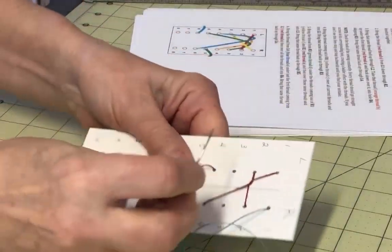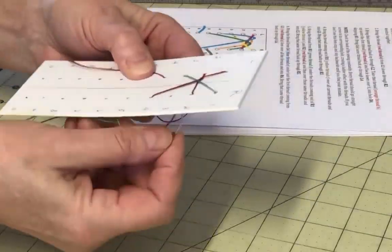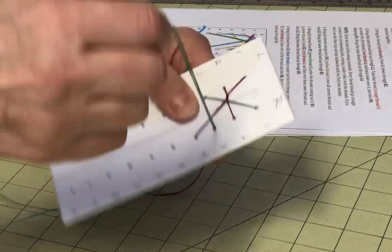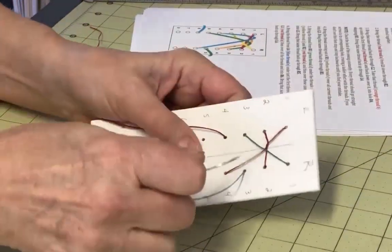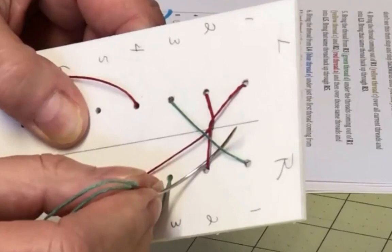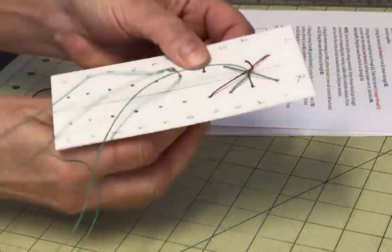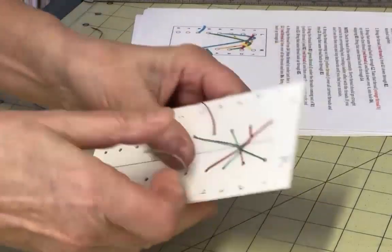Now move to the thread coming out of R1, the green thread in this video, and take it over the other threads and down through L3, and then back up through R3. Take the same thread up, under, and over the threads coming out of R1 and R2, and then down into L5. Bring that same thread up through R5.